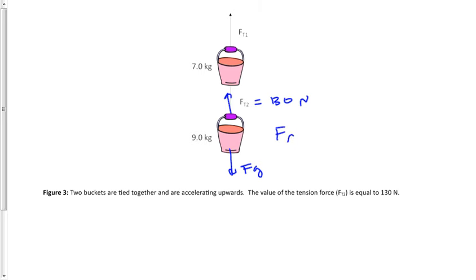So I'll say force net is equal to force tension 2 minus force gravity. So F equals MA for force net, so I'm going to say 9.0A is equal to 130 minus 9.0 times 9.8.